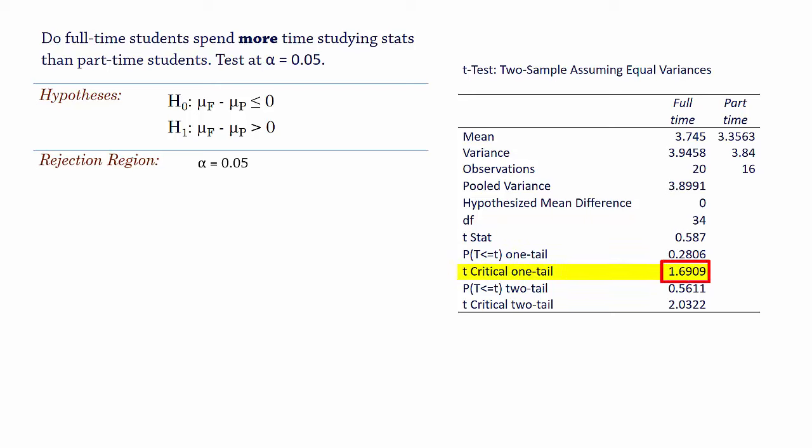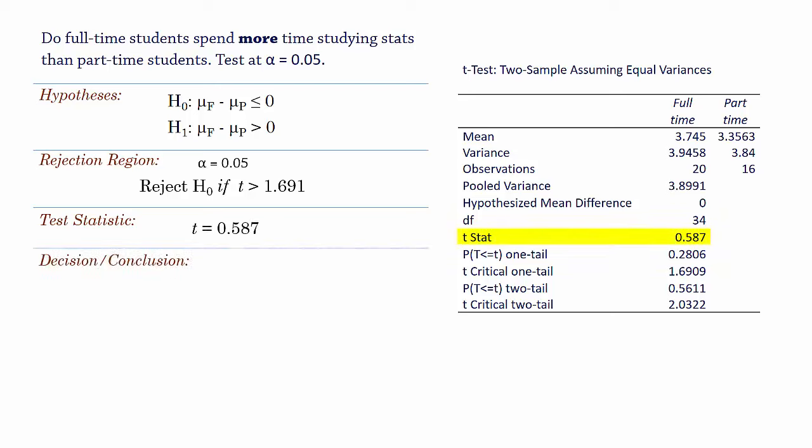It's a right-tailed test, so we reject the null hypothesis if the test statistic is greater than positive 1.691. The test statistic is t equals 0.587. We can now make a decision on whether or not to reject the null hypothesis.